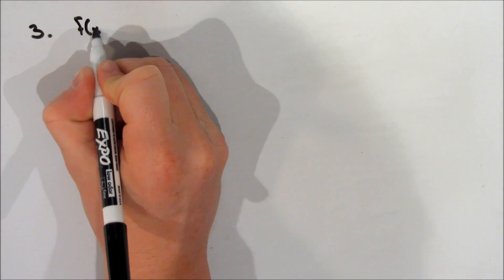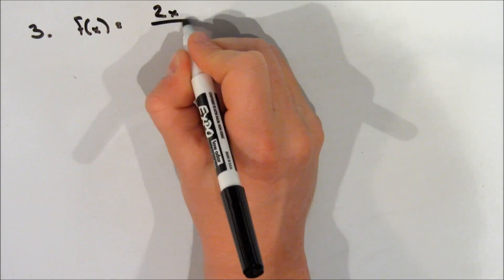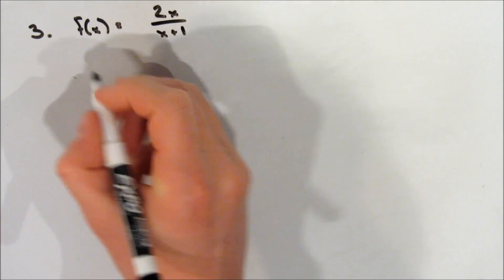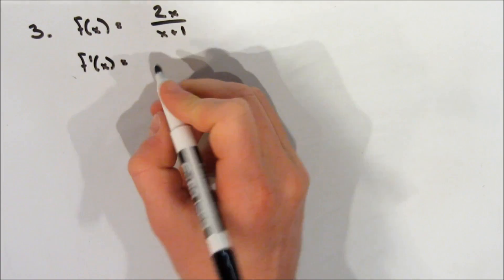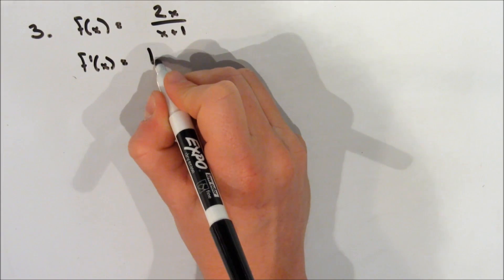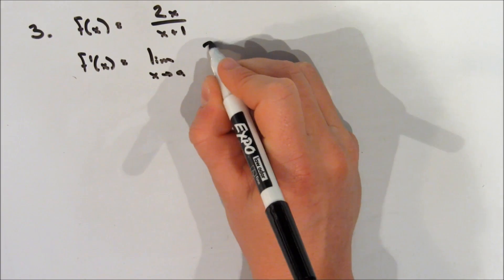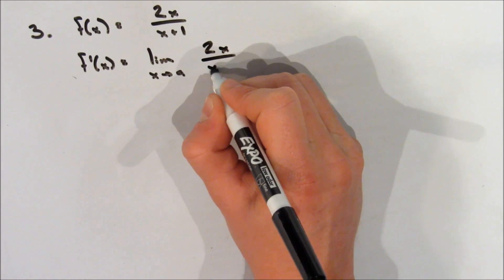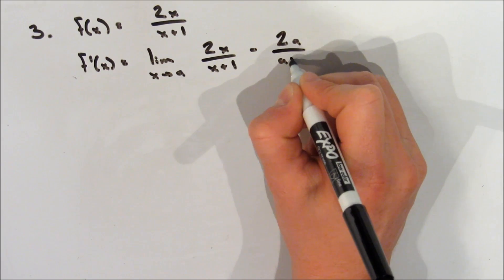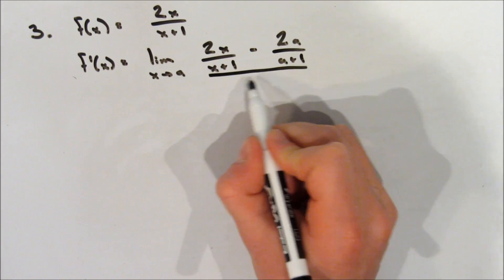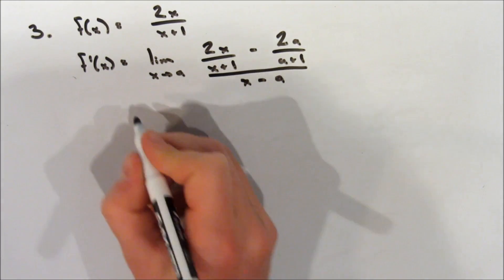Alright, so this is the final example I'm going to show you today. We're going to take a look at the function f(x) equal to 2x over x plus 1. To find the derivative, we're going to say f'(x) is equal to the limit as x approaches a of f(x), so 2x over x plus 1, minus f(a), which is 2a over a plus 1. All of this is over x minus a.